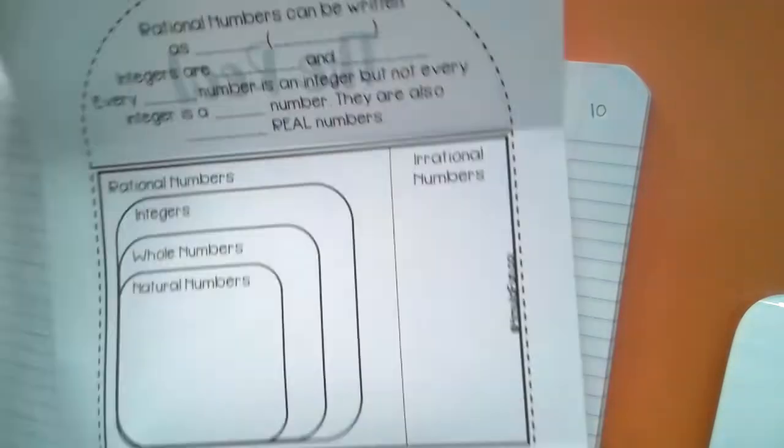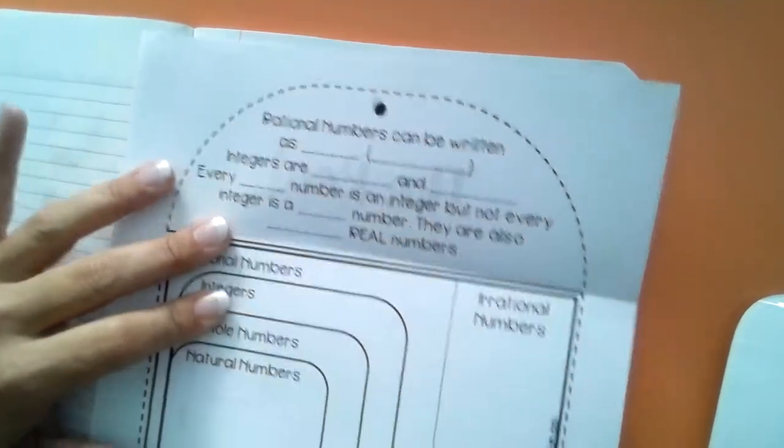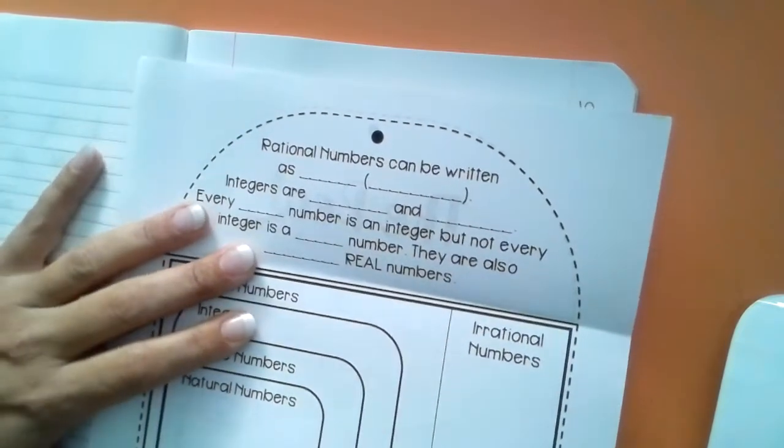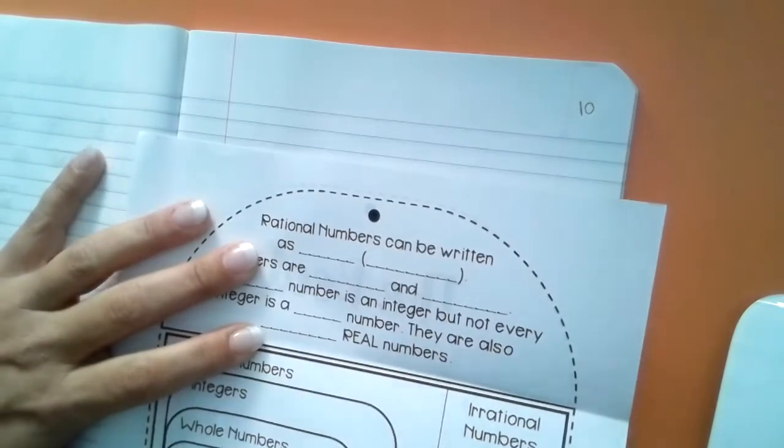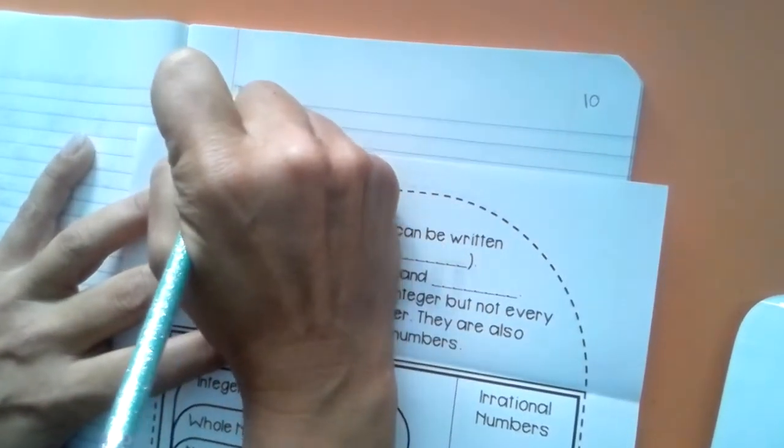You're going to get a sheet that looks like this. I don't know what color it's going to be. It may be white. I would suggest taking the notes before we glue. So let's title page 10, the real number system.